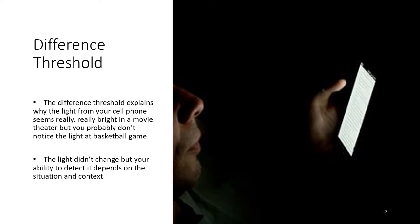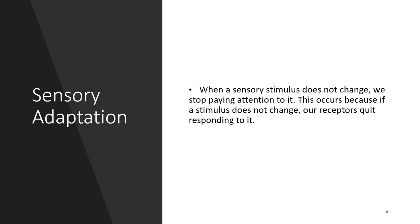Sensory adaptation happens when a sensory stimulus doesn't change and we stop paying attention to it — because if a stimulus doesn't change, our receptors quit responding to it. Imagine going into a noisy library with people talking, studying, and flipping pages. At first it's very annoying, but you sit down and begin to study. Over time, you stop noticing the sounds around you. Those sounds that once annoyed you are no longer bothering you because you've adapted to that stimulation — your receptors have stopped responding to the unchanged stimulus.